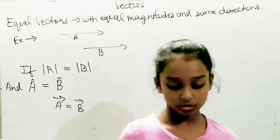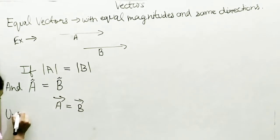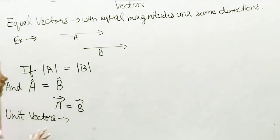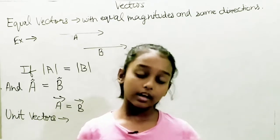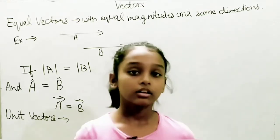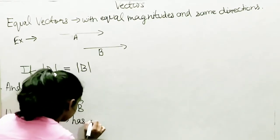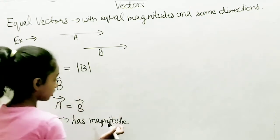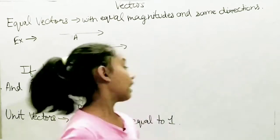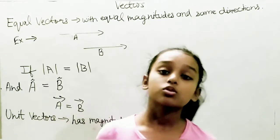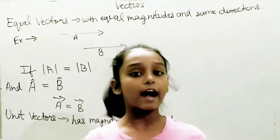Now my next topic is unit vectors. What are unit vectors? Unit vectors are vectors with magnitude equal to 1 and a given direction. The main definition is that unit vectors have magnitude equal to 1. I am writing that on the board. The purpose of unit vectors is that they are used to represent the direction of a vector.